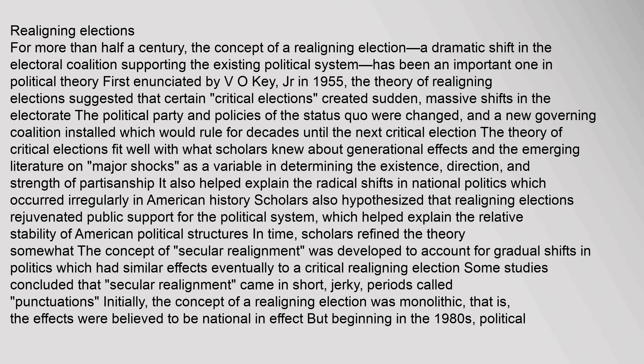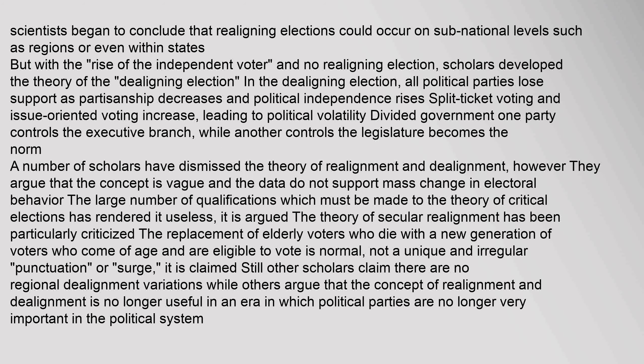The theory of critical elections fit well with what scholars knew about generational effects and the emerging literature on 'major shocks' as a variable in determining the direction and strength of partisanship. It also helped explain the radical shifts in national politics which occurred irregularly in American history. In time, scholars refined the theory somewhat. The concept of 'secular realignment' was developed to account for gradual shifts in politics with similar effects to a critical realigning election. Initially, the concept of a realigning election was believed to be national in effect, but beginning in the 1980s, scientists began to conclude that realigning elections could occur on sub-national levels.